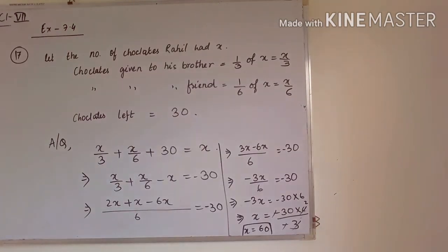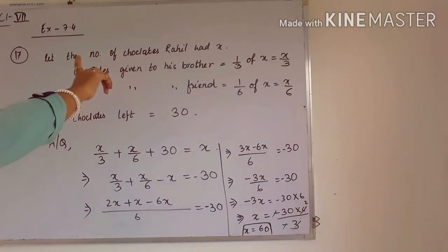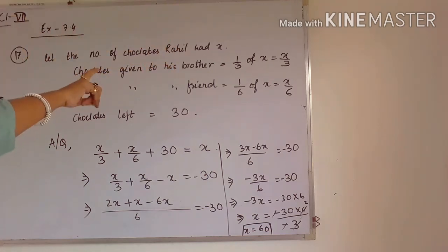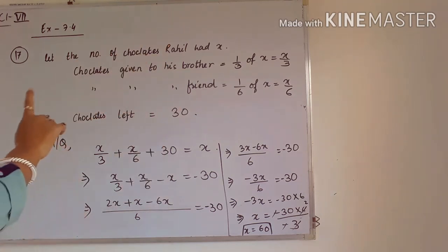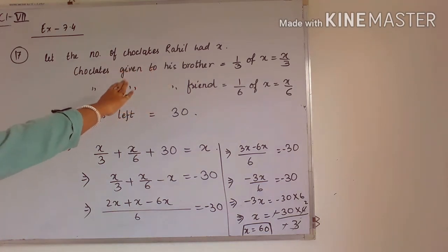The next question: Let the number of chocolates Rahul had be x. He gave some chocolates to his brother, some to his friend, and the leftover is 30. Chocolates given to his brother is 1 by 3 of x, that is x by 3. Chocolates given to his friend is 1 by 6 of x, that is x by 6. The leftover chocolate is 30.